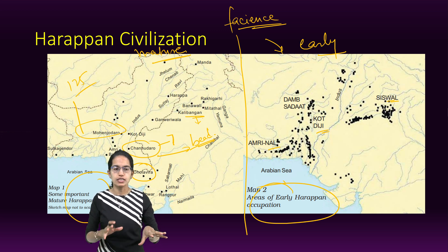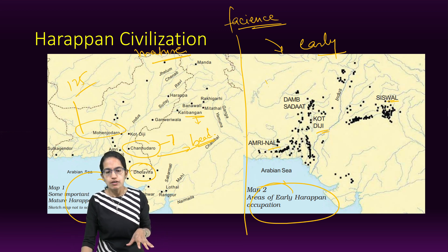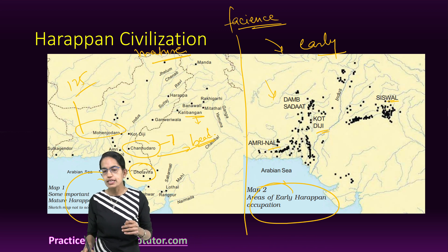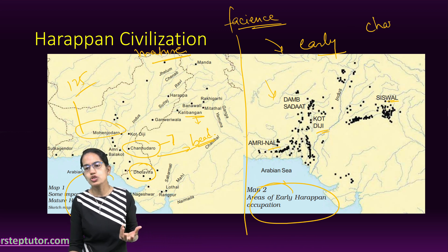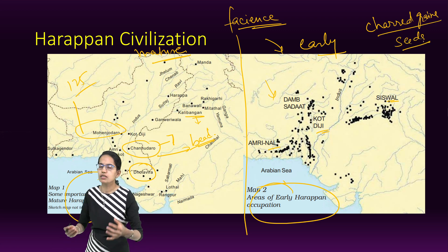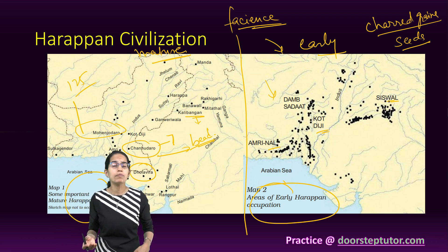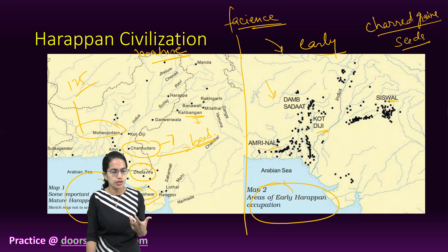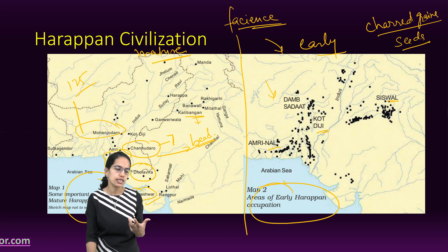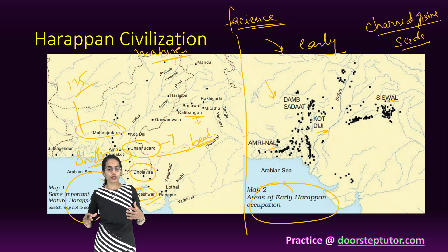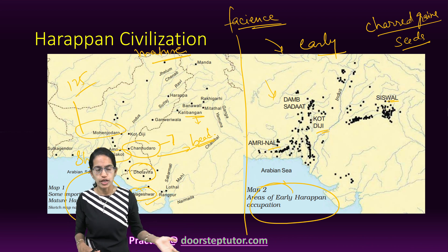The mature Harappan civilization occupied most of the regions that were there in the early Harappan civilization. Both shared some common strategies, including the kind of cultivation. Charred grain seeds were the most common findings. Crops cultivated included wheat, chickpea, and lentils. In the regions of Gujarat, millet was grown. Nageshwar and Balakot were two important sites connected to the ocean route and were known for shells. Shell was collected there and items made from shell were traded within and outside the Harappan civilization.